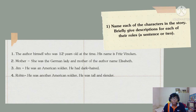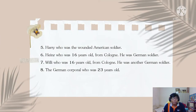The fourth character is Robin. He was not an American soldier. He was tall and slender. The fifth character is Harry, who was the wildest American soldier in the story. The sixth character is Haines, who was 60 years old. He was a German soldier. The seventh character is Villy, also 60 years old, and another German soldier.